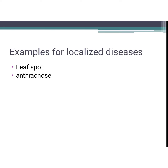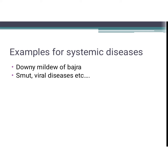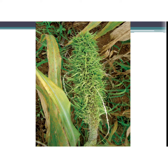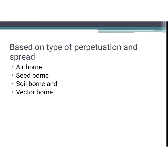Examples for localized diseases are leaf spot and anthracnose. Leaf spot affects a particular part of the plant — the leaf only — that's why it's a localized disease. Examples for systemic diseases are downy mildew of bajra, caused by Sclerospora graminicola, and smut and viral diseases. In the picture, you can see leaf spot as an example of a localized disease, and the green ear head symptom of downy mildew of bajra where almost the whole plant is affected — a systemic disease.